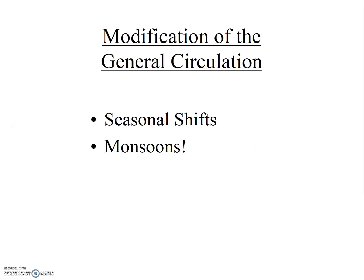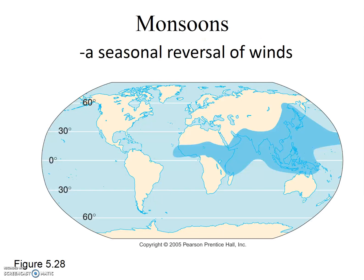Next, we'll look at the second modification of the general atmospheric circulation pattern: monsoons. A monsoon is a seasonal reversal of wind. The major monsoon areas are shown on the map here.